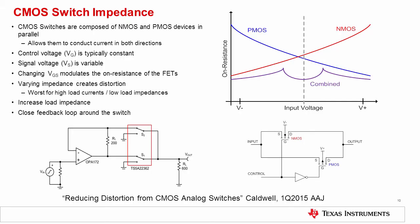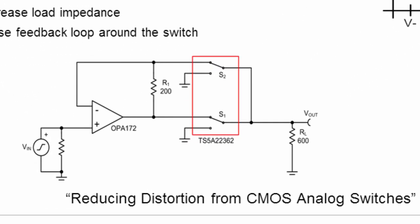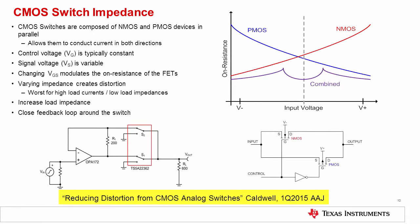This op amp circuit illustrates one possible solution using two switches. Switch one is in the forward pathway and switch two is in the feedback path. The current through switch two is essentially zero since it connects to the inverting input of the amplifier, so it does not introduce any additional distortion. Switch two provides feedback from the output node and allows feedback to cancel distortion introduced by switch one. Resistor R1 provides a feedback path when the amplifier is disconnected from the load. Further details are given in 'Reducing Distortion from CMOS Analog Switches' by John Caldwell, published in the First Quarter 2015 Analog Application Journal.